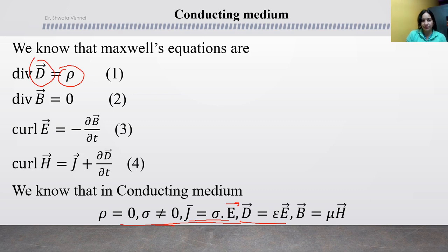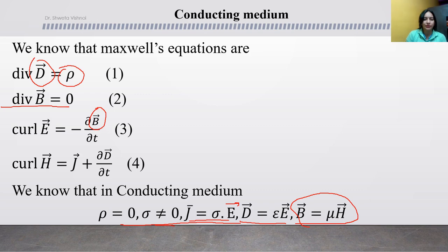In the second equation, we substitute B equals mu H and mu factors out, giving divergence H equal to zero. In the third equation, this will be minus mu del H over del t. In the fourth equation, J becomes sigma E and D becomes epsilon E, so curl H equals sigma E plus epsilon del E over del t.